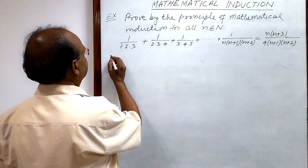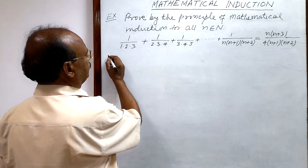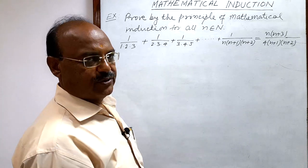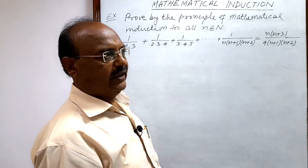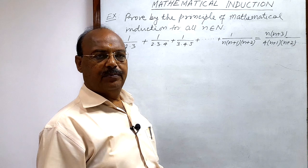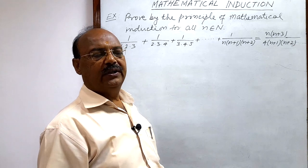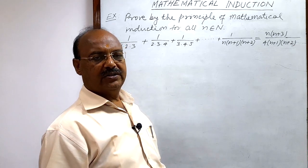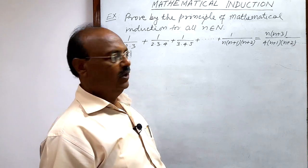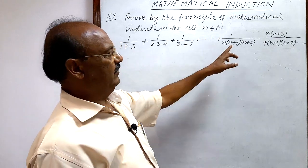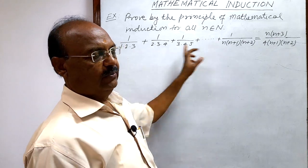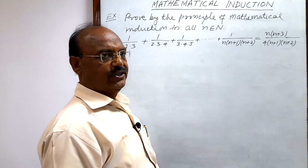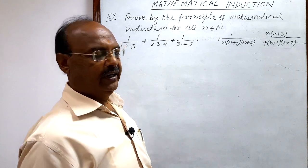The three steps are: first, we have to show that P(1) is true; second, we assume that P(r) is true; and third, we have to show that P(r+1) is true. This given mathematical statement is denoted by the notation P(n).